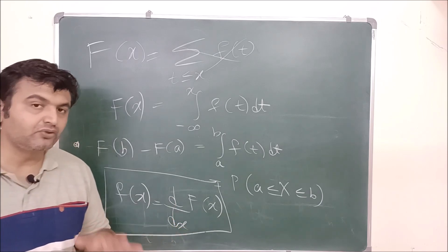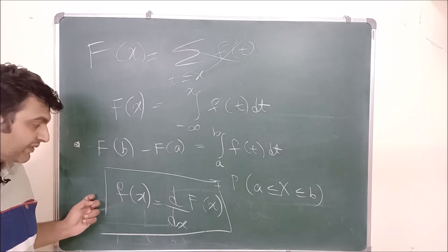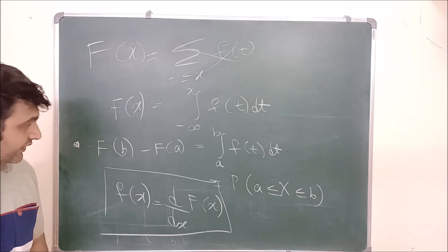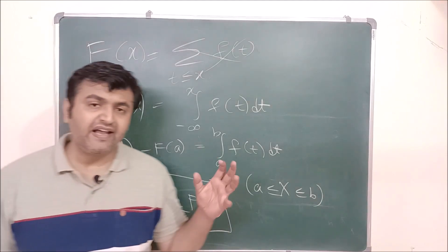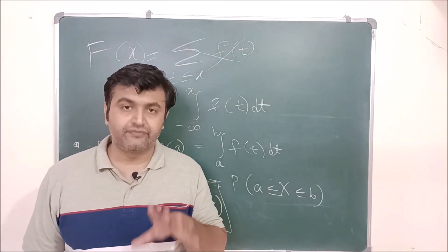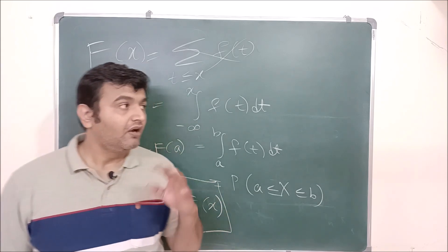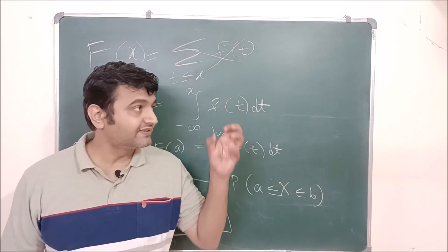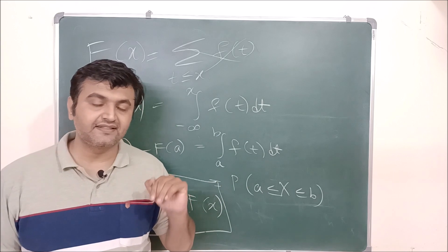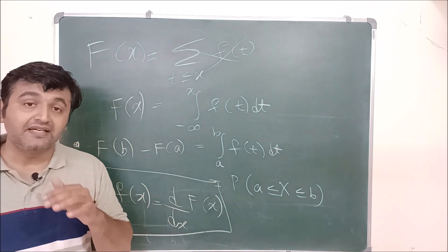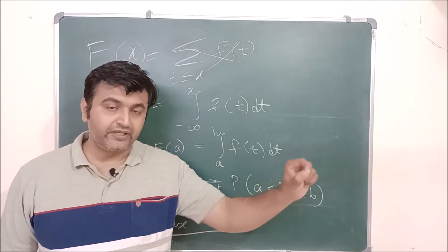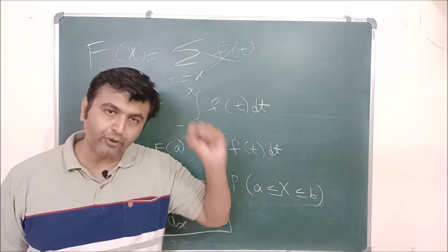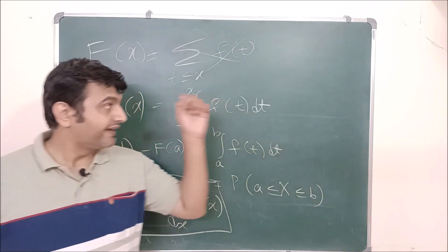Wherever there is a discontinuity, you ignore those points. These are two nice properties that capital F follows. Another thing I would like you to observe is why we don't call this PMF here. Earlier we had PMF for discrete; for continuous, why won't PMF work? The real numbers are dense in nature — that's why the name 'density.' In the discrete case you evaluate the probability at each point because you can discretize the range space x₁, x₂, and so on. But can you do that here? No.